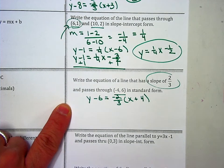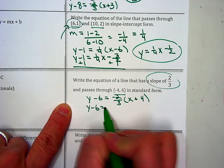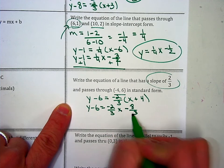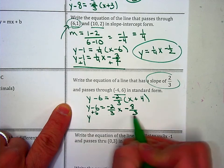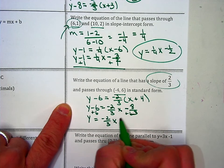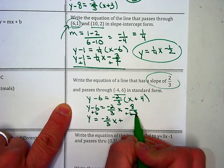I need to go to slope-intercept next. Distribute: negative 2 thirds x minus 8 thirds. Add 6 plus 6 plus 6. Use your calculator. Negative 2 thirds x. If you do this on your calculator, I believe it becomes, this is 10 thirds.